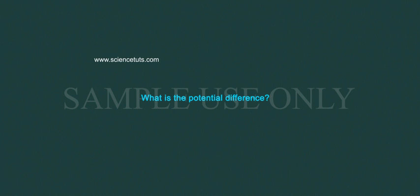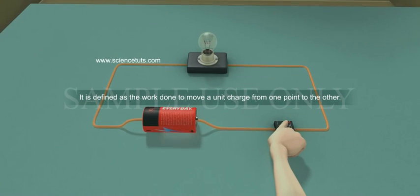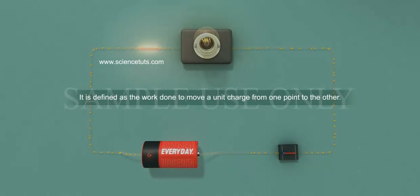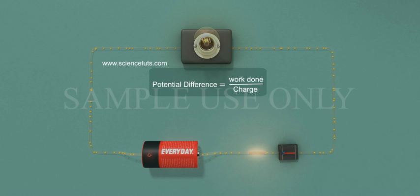What is the potential difference? It is defined as the work done to move a unit charge from one point to the other. Potential difference between two points equals work done by charge, i.e., V is equal to W by Q.